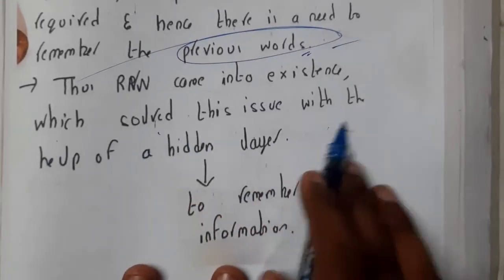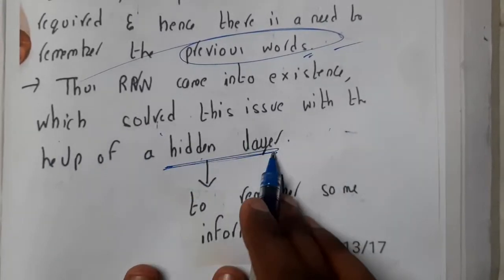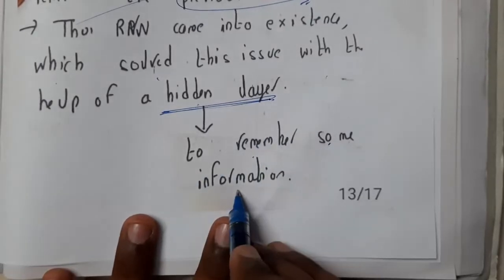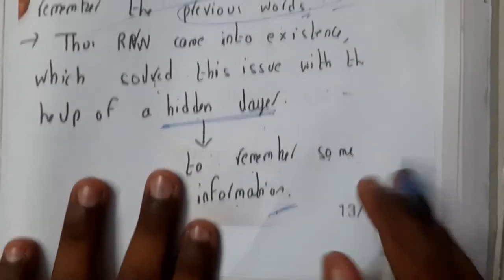Thus recurrent neural networks came into existence which solved this issue with the help of a hidden layer. Here we will be having a hidden layer to remember some information. This hidden layer will be a hidden place where you can store information.